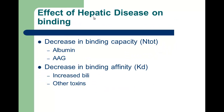Hepatic disease affects binding in several ways. There is a decrease in binding capacity due to decreases in both albumin and AAG, though AAG can sometimes increase. There are also decreases in binding affinity because bilirubin has very high affinity for binding proteins and can displace drugs from their binding sites. Other toxins not being removed by the diseased liver can also compete for those binding sites.